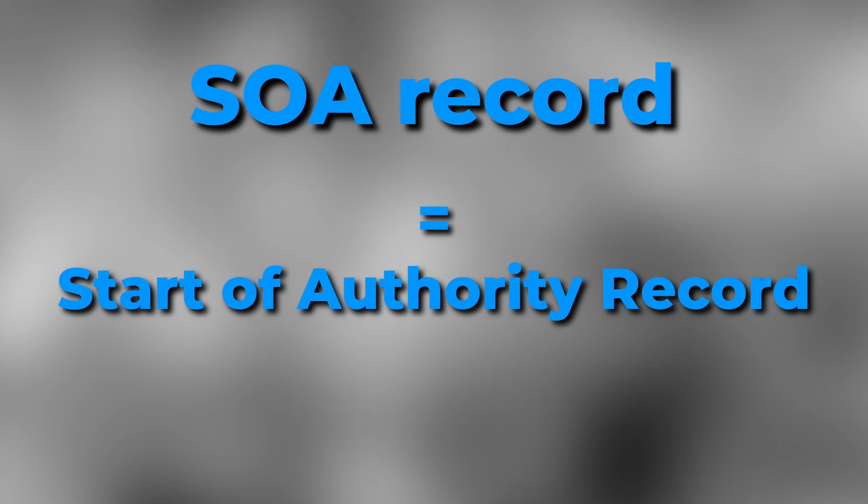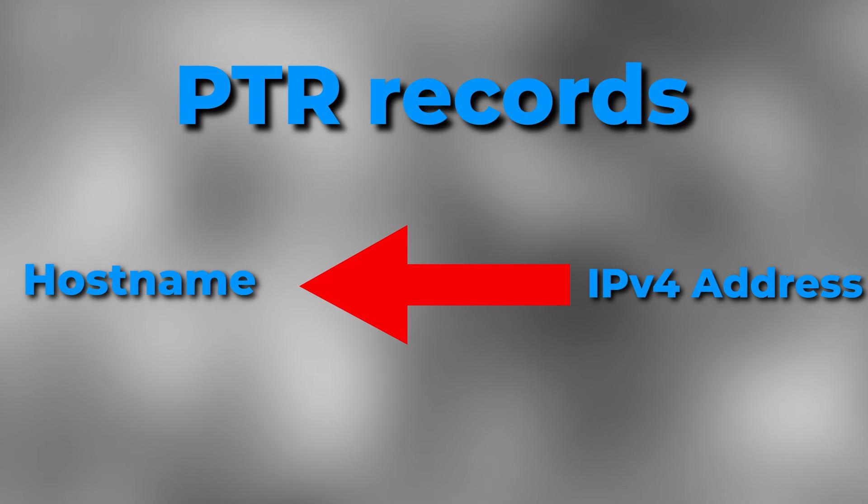Next, we have SOA records, which stands for Start of Authority record. An SOA record is used to store important information about a domain or zone, such as the email address of the domain administrator or the last time the domain was updated. PTR records, or pointer records, are used to point an IP address to a domain name — the exact opposite of an A record. A records point names to IPv4 addresses, while pointer records point IPv4 addresses to names. TXT records, also known as text records, are used by administrators to store human-readable information inside the DNS.